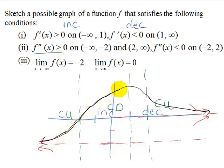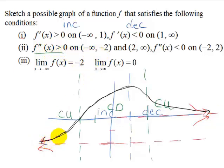Here is our graph of the function that meets all of our conditions. To verify: the first derivative is positive from negative infinity to 1, so the function increases until x equals 1; then the first derivative is negative from 1 to infinity, so the function decreases. The second derivative is positive from negative infinity to negative 2, giving concave up; then negative from negative 2 to 2, giving concave down; then positive after that, giving concave up again. We see the graph heads towards negative 2 for left-hand behavior and towards 0 for right-hand behavior.